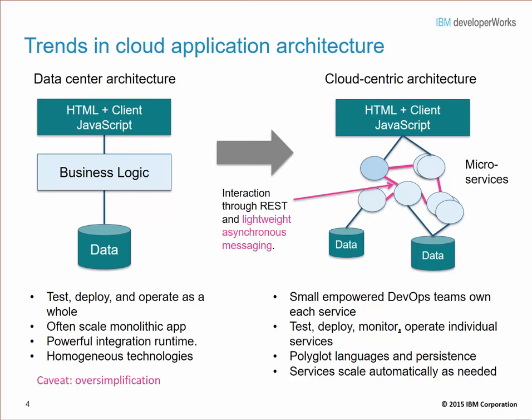Now let's take a look at the evolution of application architectures as we move out of the data center and into the cloud. In the traditional data center architecture, we typically had large monolithic applications written using homogeneous technologies that were tested, deployed, and operated as a whole. As we evolve to a cloud-centric architecture, the application front ends would connect to a series of microservices, and each service would be controlled by a small DevOps team. The services themselves would be tested, deployed, monitored, and operated individually.